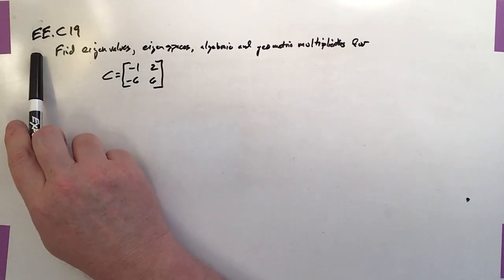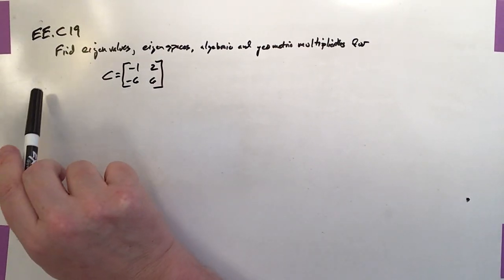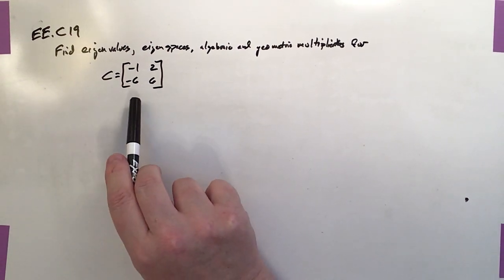Okay, this one is eigenvalues and eigenvectors C19, and we're asked to find several things for matrix C.